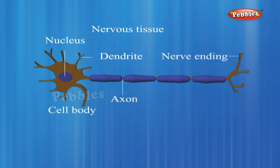Nervous tissue. All cells possess the ability to respond to stimuli. However, cells of the nervous tissue are highly specialized for being stimulated and then transmitting the stimulus very rapidly from one place to another within the body. The brain, spinal cord and nerves are composed of nervous tissue. The cells of this tissue are called nerve cells or neurons. A neuron consists of a cell body with a nucleus and cytoplasm from which long, thin, hair-like parts arise. Usually, each neuron has a single long part called the axon and many short, branched parts called dendrites. An individual nerve cell may be up to a meter long.